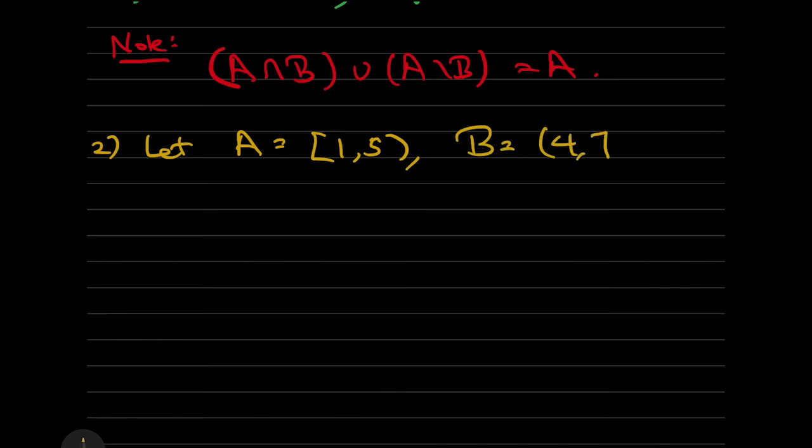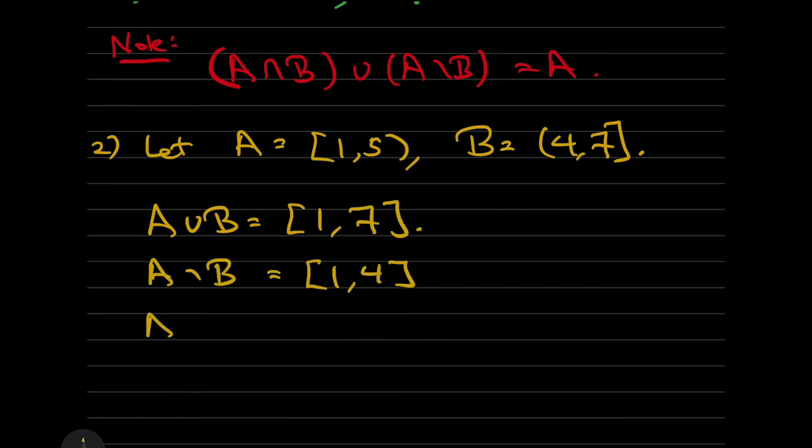Similarly, we can think of sets of real numbers, and in particular intervals. If we let A be the interval 1 to 5, closed on the left, open on the right, and B be the interval 1 to 7, open on the left, closed on the right, then for example we can compute all of these things. A union B is the closed interval 1 to 7, etc.